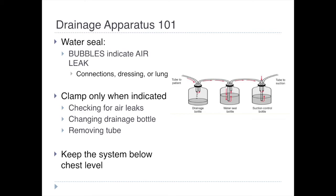If we see bubbles in that blue area, that means air leak — air coming from the tube itself, along the tubing, from the dressing if it's not completely occlusive, or from a bronchopleural or alveolar-pleural fistula. To check for an air leak, we work backwards by clamping the tubing. Otherwise, tubes should not be clamped — clamping backs up air, blood, or whatever is draining, leaving it inside the pleura. It's like not having a chest tube in at all.